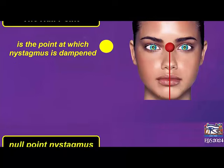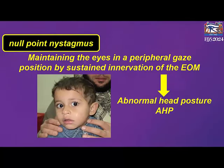The patient, to look to this null point, has to maintain the eyes in a peripheral gaze position by sustained innervation of the extra-ocular muscles. This will lead, of course, to abnormal head postures or compensatory head postures.